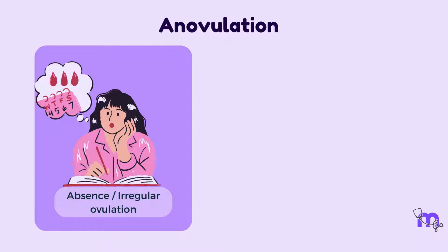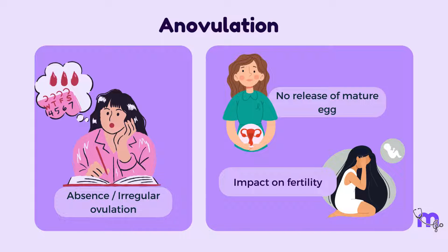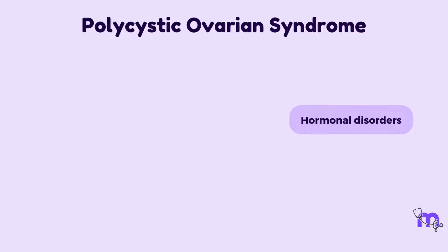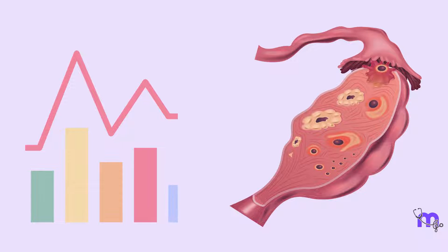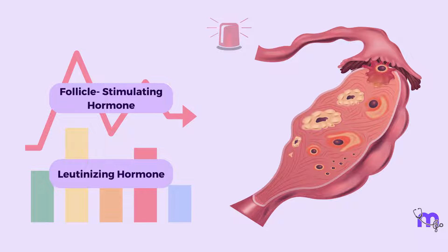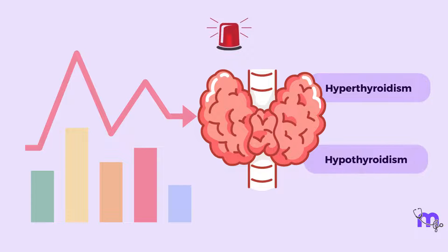Anovulation refers to the absence or irregularity of ovulation, where a woman does not release a mature egg from her ovaries during her menstrual cycle. This condition can significantly impact a woman's fertility and ability to conceive. Common causes include polycystic ovarian syndrome, a hormonal disorder affecting the ovaries; fluctuations in FSH and LH levels that hamper ovulation; and hormonal dysregulation from hyperthyroidism or hypothyroidism.